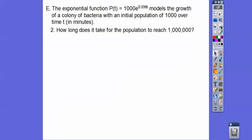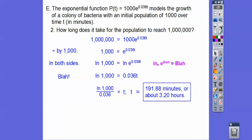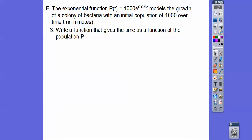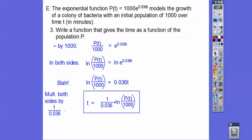To find how long to reach a million: set equal to 1,000,000, divide by 1,000, natural log both sides using the blah-blah rule, then divide by 0.036 to get about 191.88 minutes, which is about 3.2 hours. To write time as a function of population, solve for t: divide by 1,000, natural log both sides, then multiply by 1/0.036. That gives our function for time.